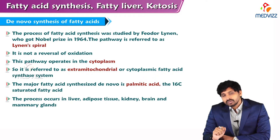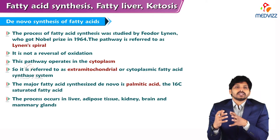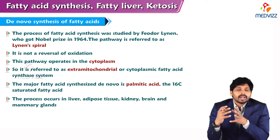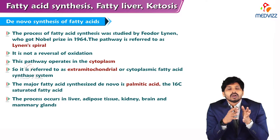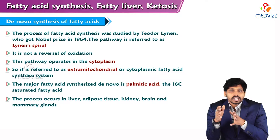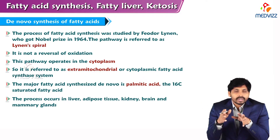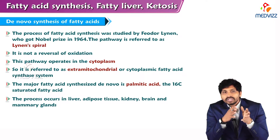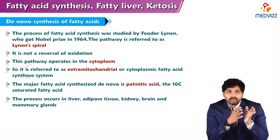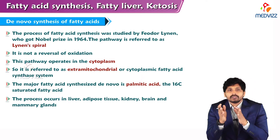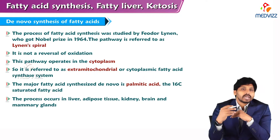In our previous videos we have discussed about the beta oxidation of fatty acids — how fatty acids are degraded and produce energy, same way as glucose is oxidized. Similarly, our body cells have the capability to synthesize glucose. Glycolysis is the first pathway of glucose oxidation and gluconeogenesis is partly a reversal of glycolysis.